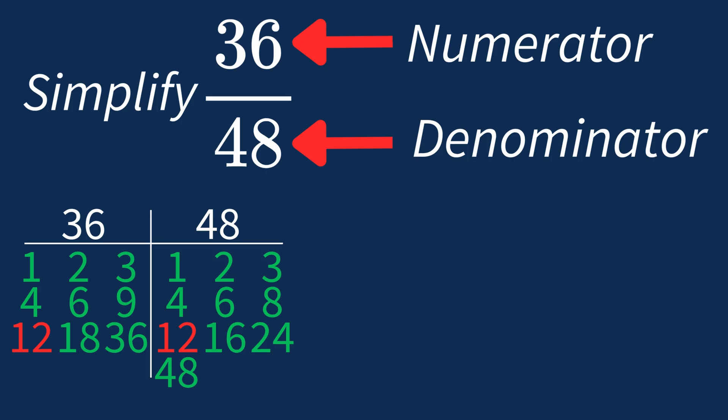This means we can divide both the numerator and denominator by 12 to simplify the fraction. Dividing the numerator, 36 by 12, gives us 3. Dividing the denominator, 48 by 12, gives us 4.